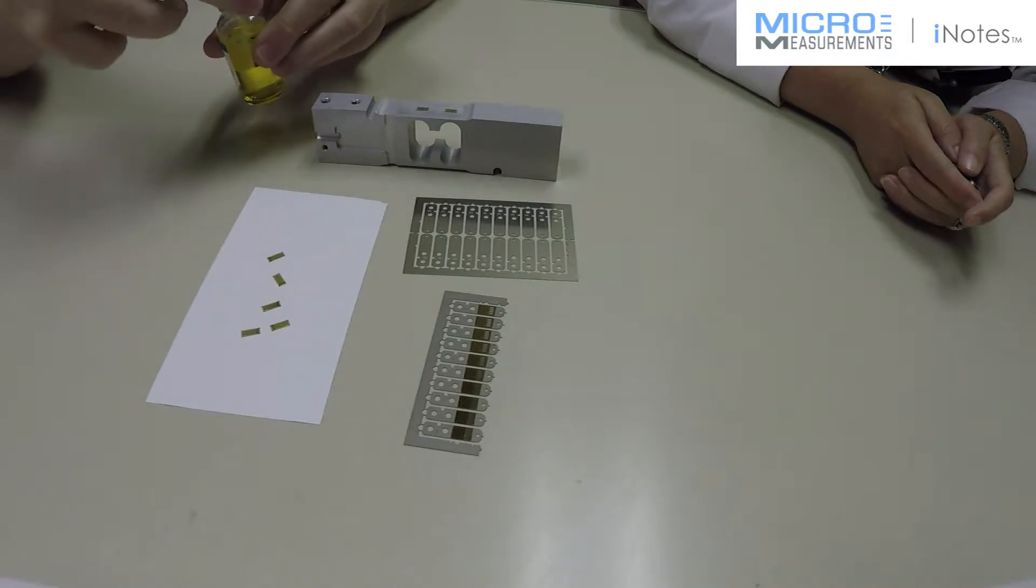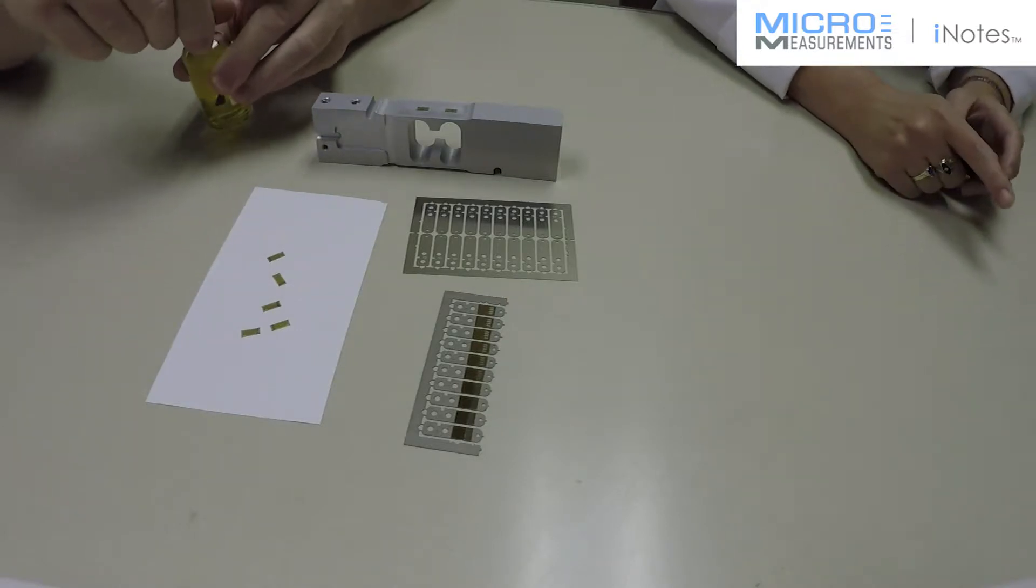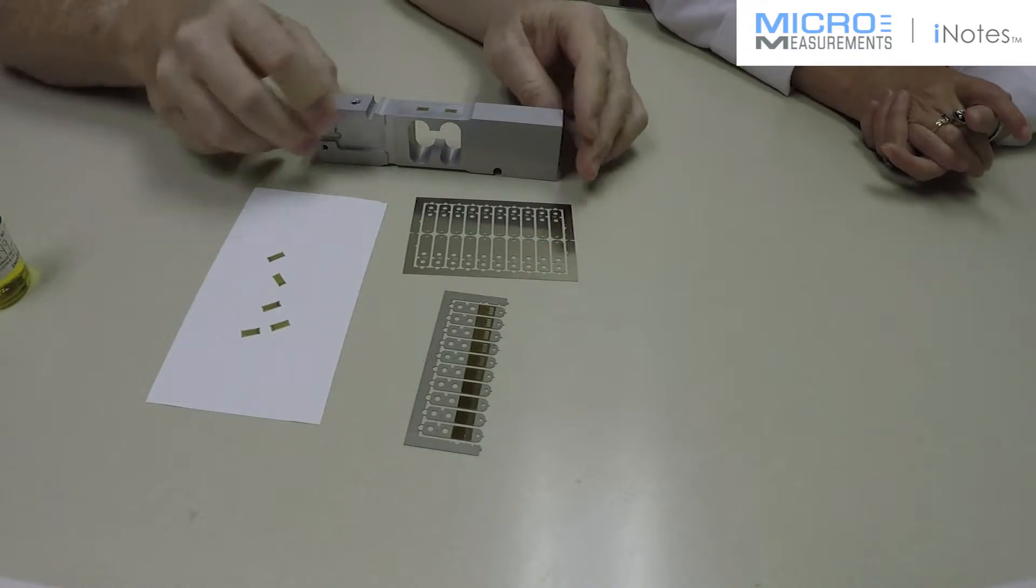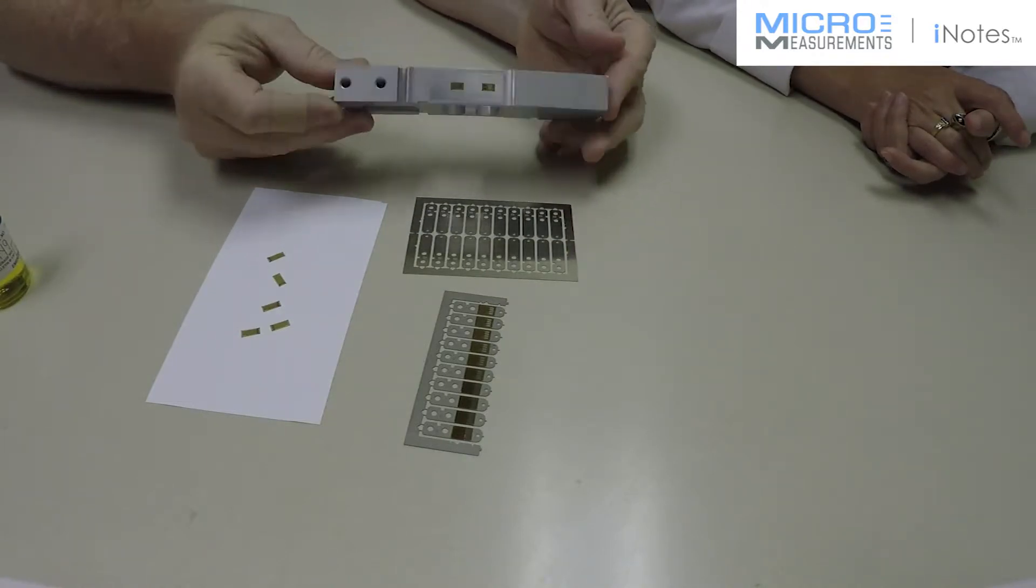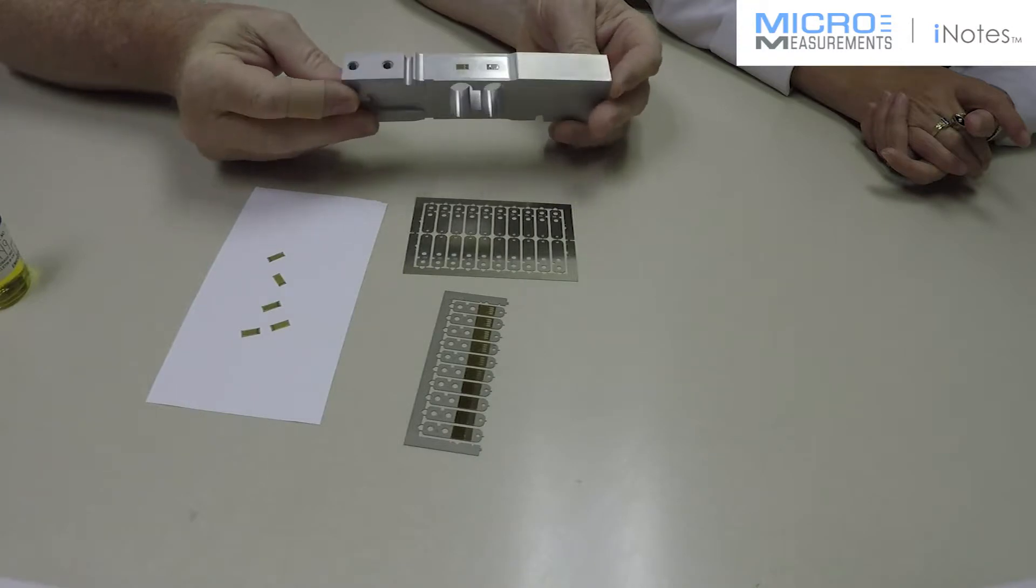to the back of the gauge, and then position the gauge, tape it, clamp it, and come up with an installation similar to what's shown on this aluminum transducer.